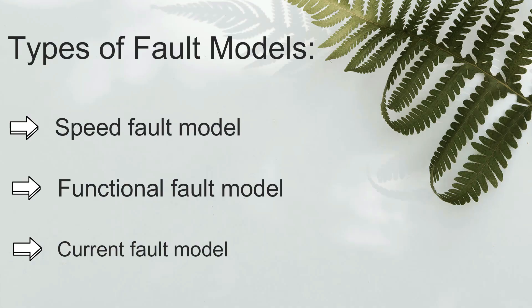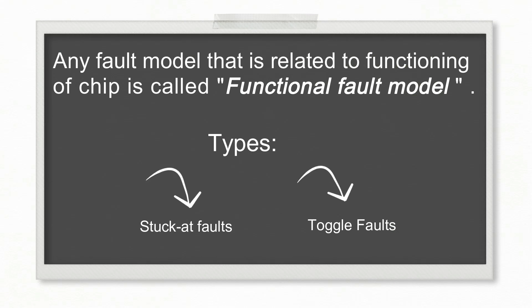Types of fault models. There are majorly three types of faults we detect in DFT. First one is speed fault model. This type of model depicts the faults when your chip works with functional clock. Second one is functional fault model, which is related to functionality of a chip. If your chip has any functional fault, it will lead to malfunction of chip. Third one is current fault model, related to current leakage issues in IC. Now, we will discuss in detail about these three faults individually.